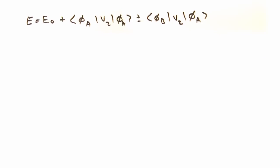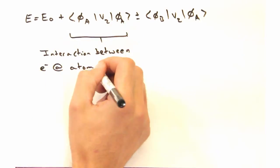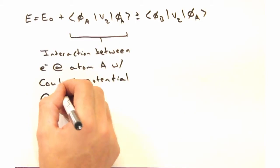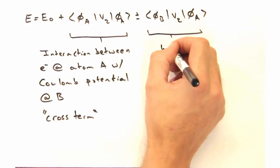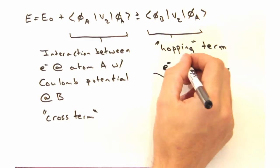Let's take a look at these terms. We've got special names for them. This term is the Coulomb potential felt by orbital A from nucleus B. We call it the cross term. The other term is called the hopping term. Hmm, I'm not seeing the hopping. Yeah, fair enough.